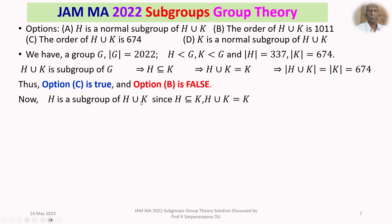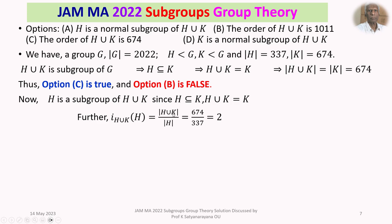Now H is a subgroup of H union K. Since H is a subgroup of K and H union K is K, H is a subgroup of H union K. Let us find the index of H in H union K. The index equals order of H union K divided by order of H. Since these are finite groups, this is 674 divided by 337, which equals 2. So the index is 2.